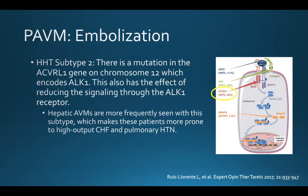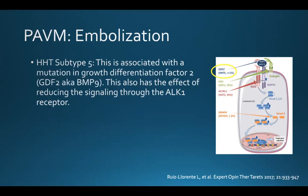In HHT subtype 2, there is a mutation in the ACVRL1 gene on chromosome 12, which encodes ALK1. This also has the effect of reducing the signaling through the ALK1 receptor. In this subtype, hepatic AVMs are more frequently seen, and this makes these patients more prone to high-output heart failure and pulmonary hypertension. In HHT subtype 5, there is a mutation in the GDF2 gene, also known as BMP9, and this also reduces signaling through the ALK1 receptor.